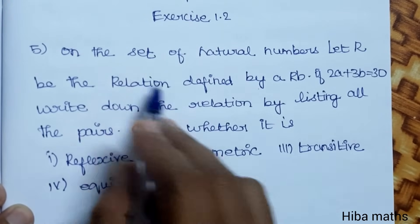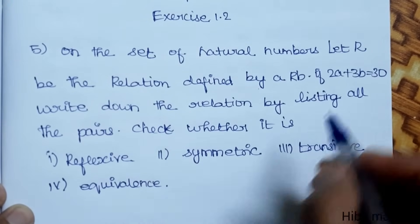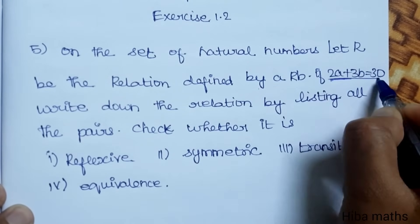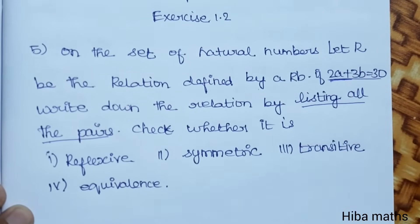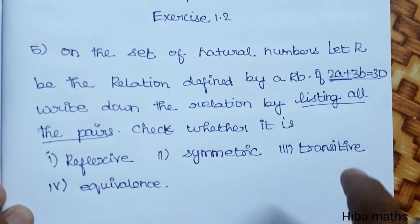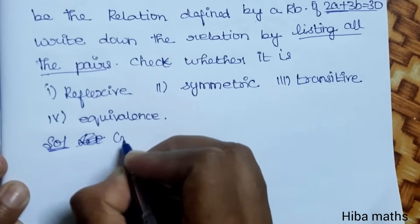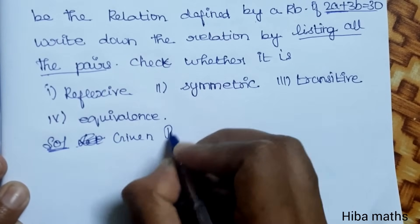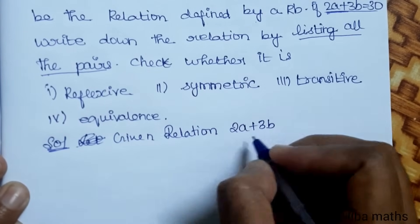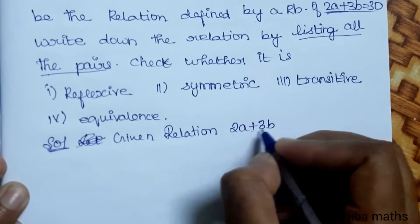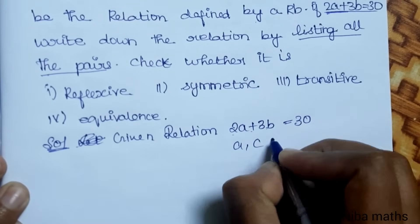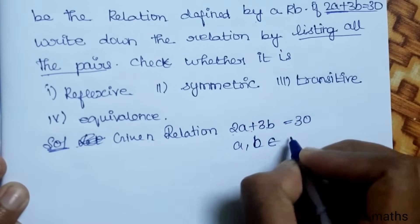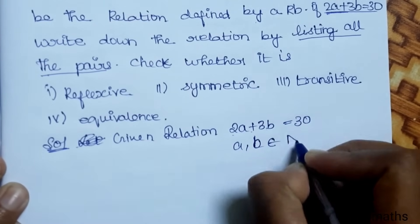This question is a little different — given the relation, we have to find the pairs, then check reflexive, symmetric, transitive, and equivalence. We will work through the solution. The given relation is 2a plus 3b equals 30, where a and b belong to the natural numbers.